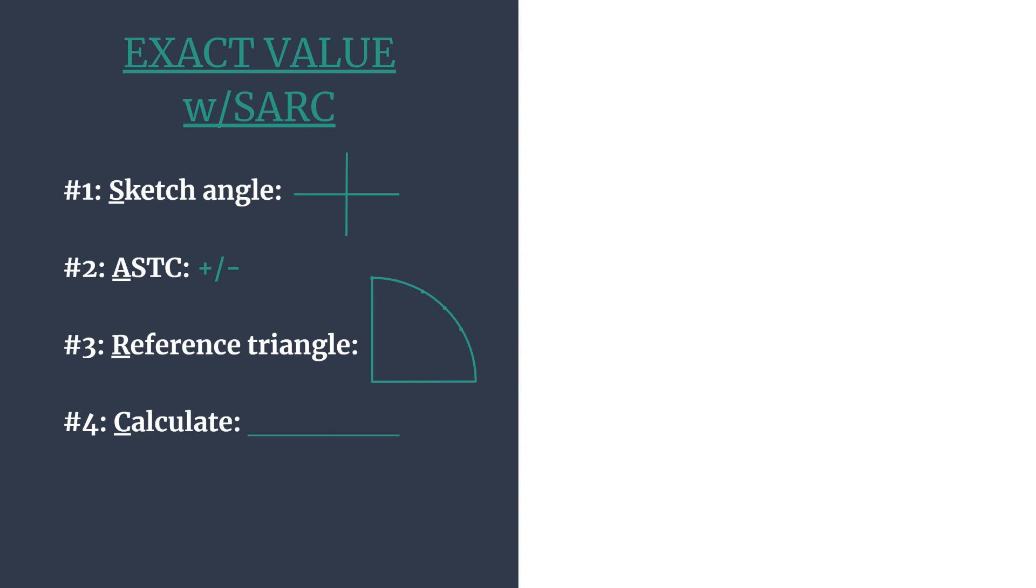We'll do that so we can decide if our final answer should be positive or negative, and that really tackles that common error of omitting a negative sign. In the third step, the R, we'll find the reference triangle—the reference angle, the special right triangle, and coordinates to work with. And the C, our final step, we will calculate our trig ratio.